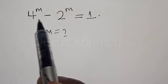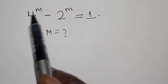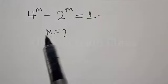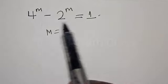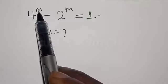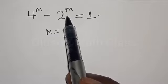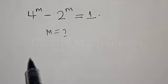Welcome to my class, the Olusta class. In today's class, we want to look at how we can quickly find the value of m from this given equation: 4 raised to power m minus 2 raised to power m is equal to 1.